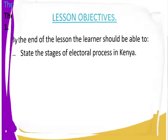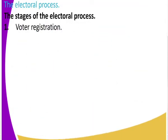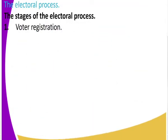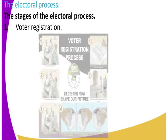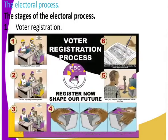The first stage of the electoral process is voter registration. For you to go and vote you must have registered as a voter. Now, the body responsible for carrying out elections in Kenya is the IEBC — the Independent Electoral and Boundaries Commission. The IEBC registers voters.